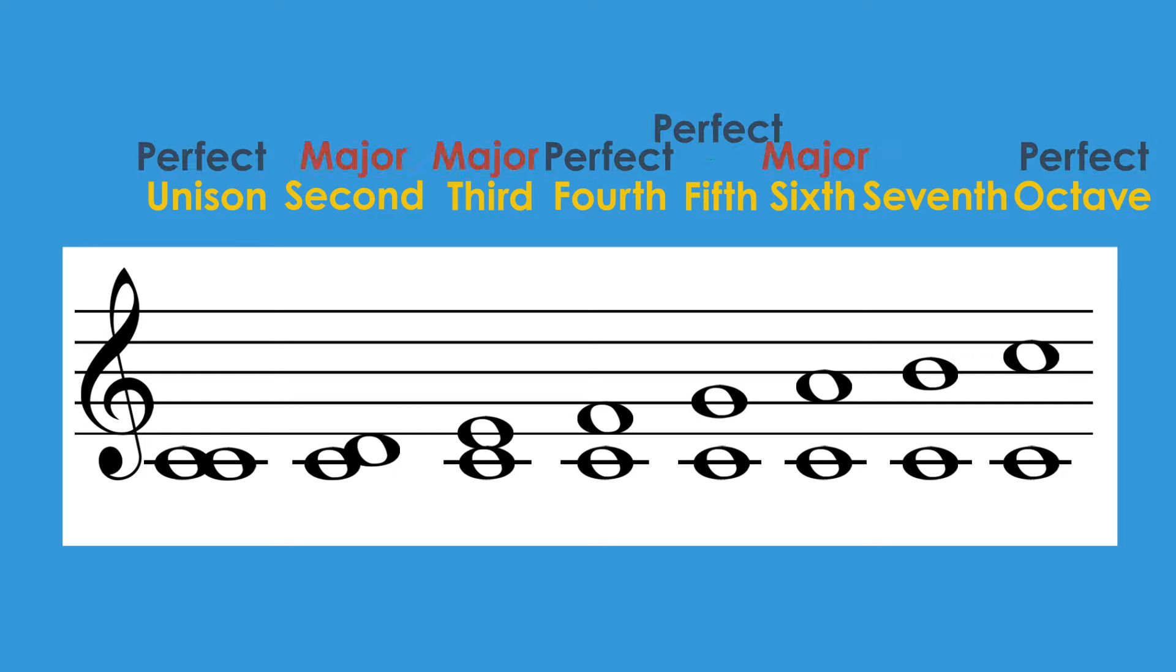So we have a perfect unison, a major second, a major third, a perfect fourth, a perfect fifth, a major sixth, a major seventh, and a perfect octave. These intervals will be the same in any major scale.